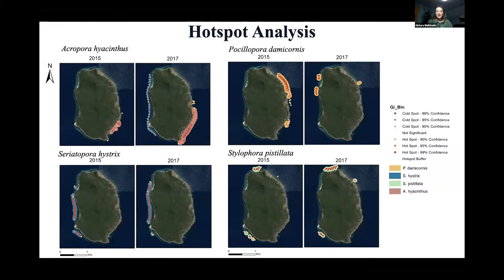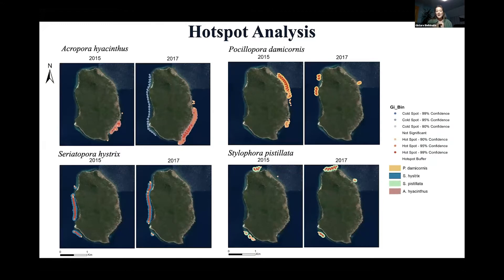Hotspot analysis concluded that there are definitely differences between species, and that could be attributed to coral life history traits. For example, Isopora palifera, marked in green here, is a brooding species, meaning that larvae are competent to settle close to parental colonies. Therefore their hotspots and dispersal range are way narrower compared to spawning species such as Acropora hyacinthus, which can disperse much farther compared to brooders.